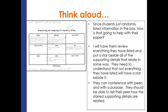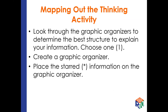Since students just randomly list information in the box, I have them review everything and put a star beside all supporting details as they relate. Then I allow them to conference with their peers with a purpose — they should be able to tell their peers how their starred supporting details are related. Because a lot of times they feel like they're related but they're not able to explain it. So we still have these talking tools going on prior to any writing. Now that we've looked at all these thought processes, it's time to look at how this is going to actually help them organize their writing.